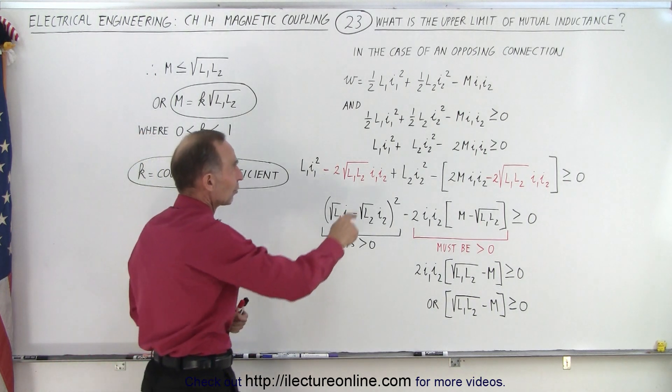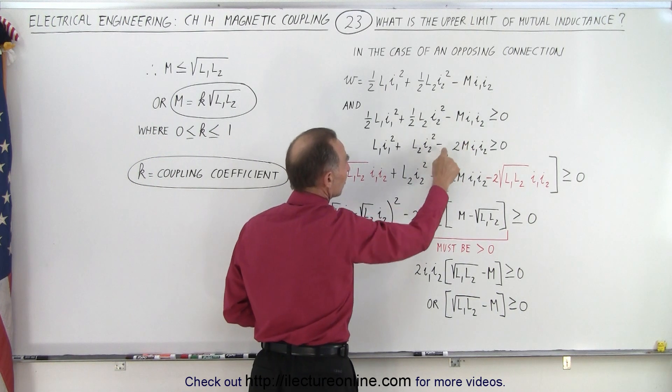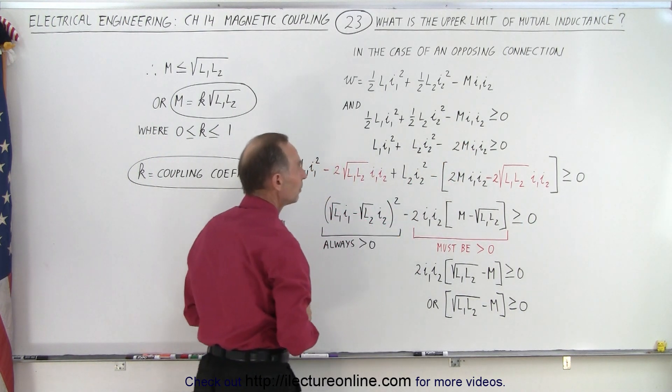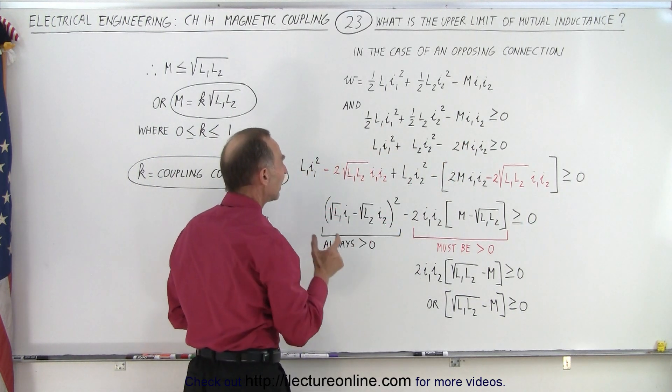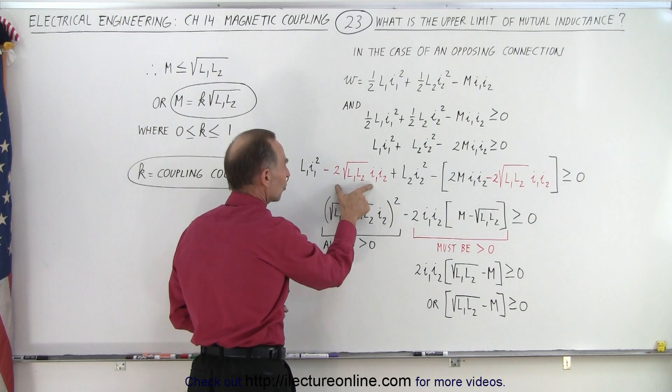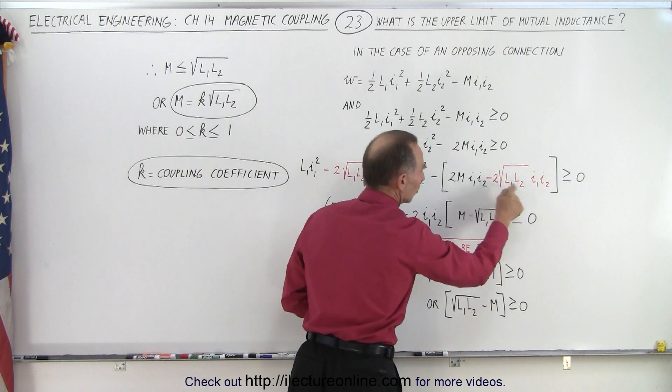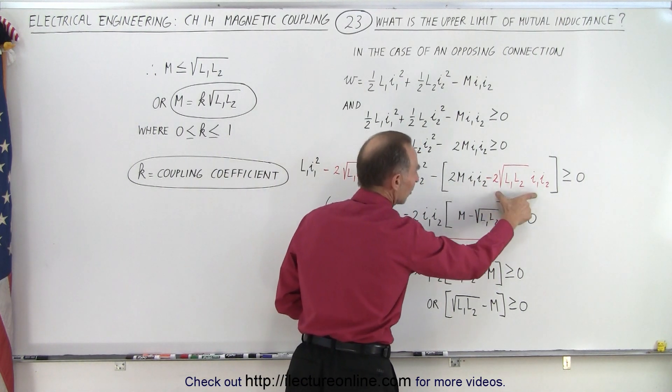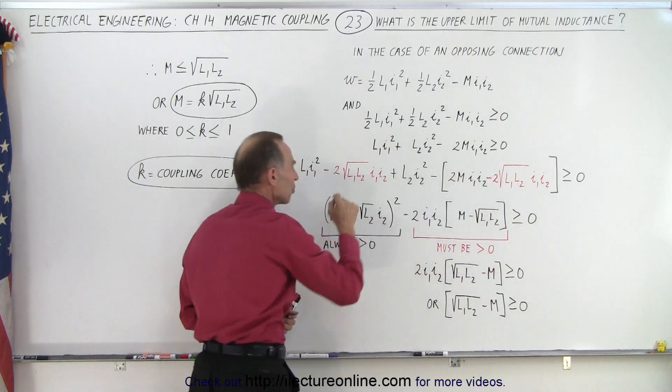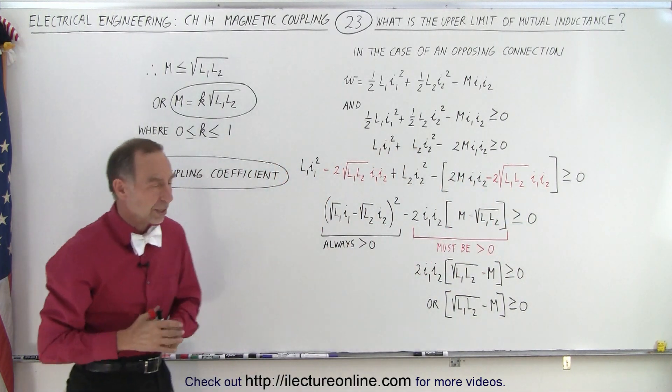What we can do is first of all multiply both sides of the inequality by two to get rid of these one-halves, and then we're going to subtract this term and add this term. Now this negative times this negative makes this positive, so we're adding it here and subtracting it there. It's a mathematical trick.